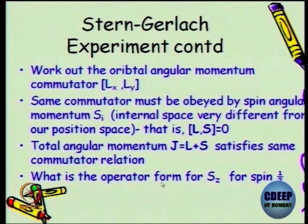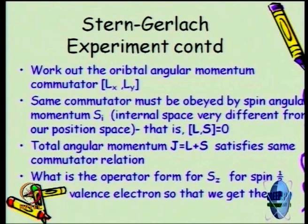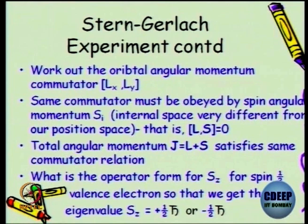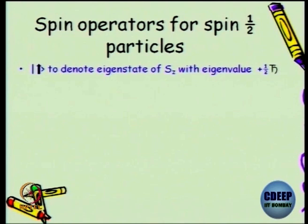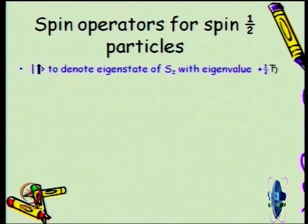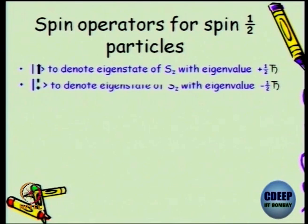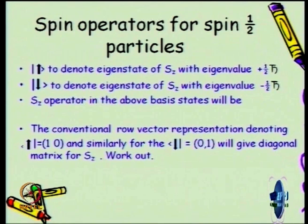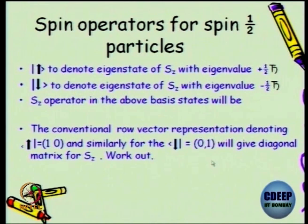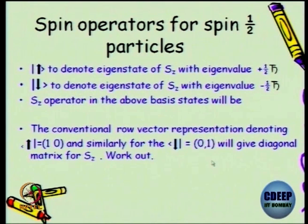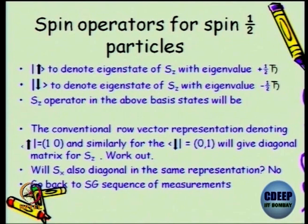What is the operator form for Sz for spin-halves? Looking at only the valence electron, we get 2 states with eigenvalues Sz = +ℏ/2 and Sz = −ℏ/2. We denote symbolically the up-spin for the eigenstate of Sz with eigenvalue +ℏ/2, and down to denote the eigenstate with eigenvalue −ℏ/2. Sz operated in this basis — up and down states with their dual vectors as row matrices — can be worked out. Will Sx also be diagonal in the same representation? No, because they are incompatible observables.